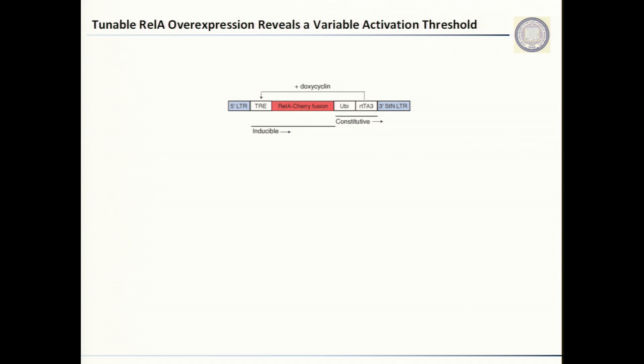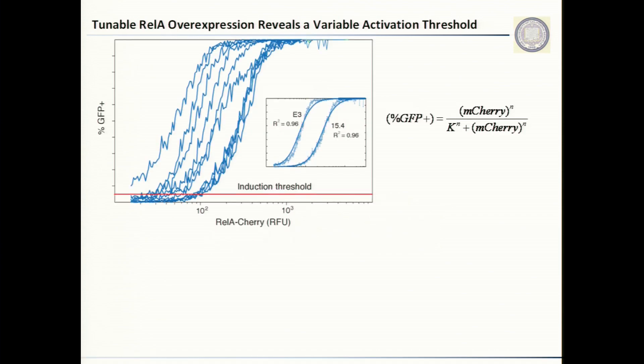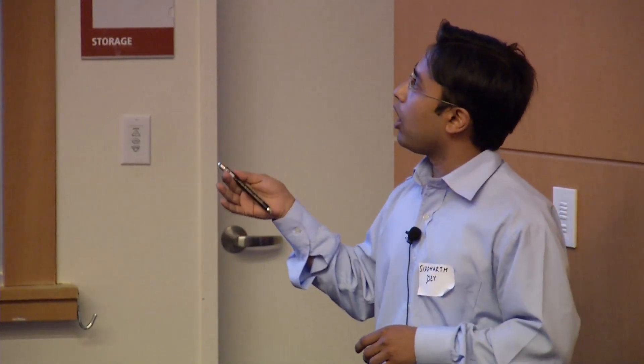To systematically study how REL-A regulates gene expression in the context of HIV and chromatin, we created a doxycycline-inducible vector where we had a fusion of REL-A and mCherry. With increasing levels of doxycycline, we can get increasing levels of this fusion protein. We inserted this vector into all 10 clones and monitored increases in GFP expression from the latent HIV clones as a function of the level of transcription factor REL-A. For all these clones, we found a sigmoidal response. One interesting feature was that all these sigmoids seem fairly similar, except they seem to be shifted along the x-axis.